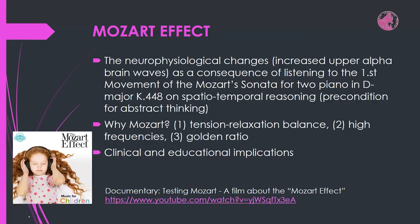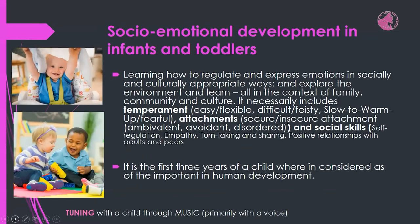Skipping now to social-emotional development. From birth to two and a half years, a child learns how to regulate and express emotions in socially and culturally appropriate ways, exploring the environment in the context of family, community, and culture. When talking about social-emotional development, we must discuss temperament, attachment styles, and developing social skills. We can categorize babies as easy or flexible, difficult or feisty, and slow-to-warm-up or fearful.